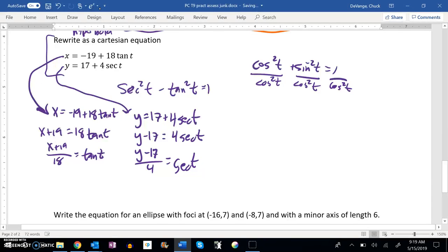Now I know tangent in terms of x and secant in terms of y, so I can plug these into the identity. Secant squared means I square this.